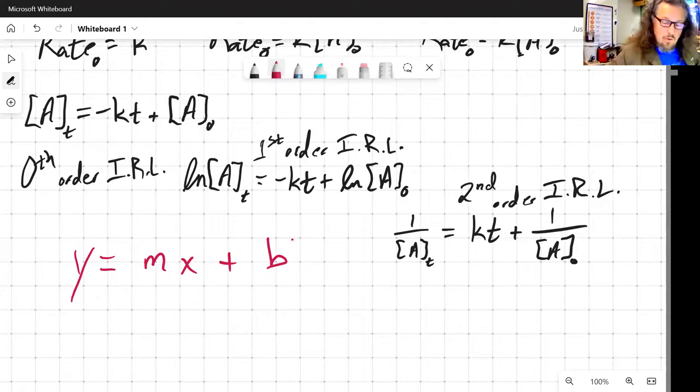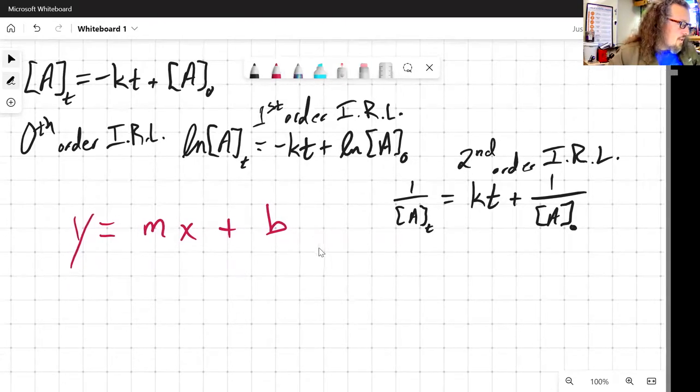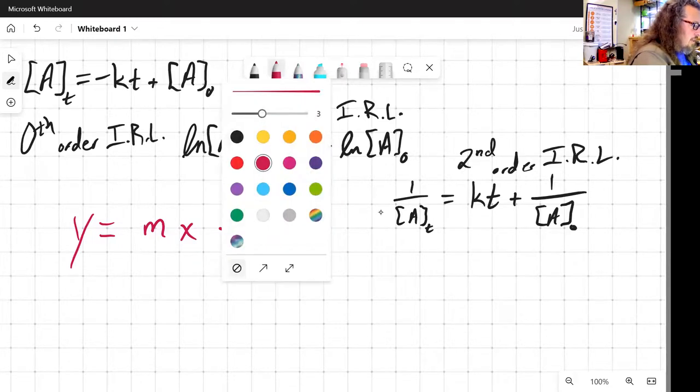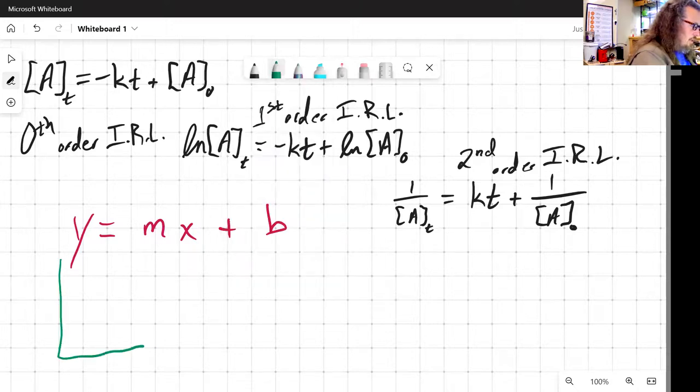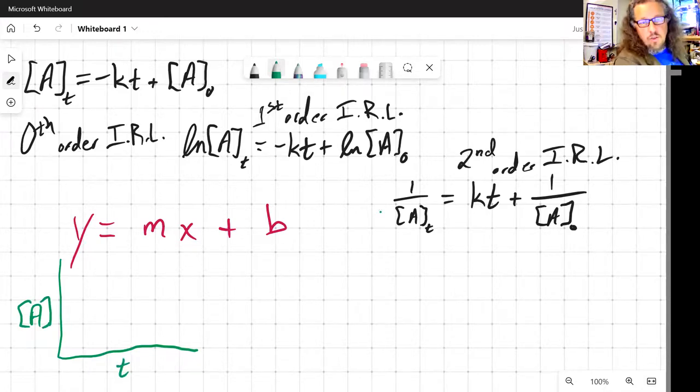But what if I've got some set of data and that set of data is something I'm going to plot. And let's plot concentration on the y-axis, time on the x-axis. Over time, concentration goes down, right? If it goes down linearly, then it must be a zeroth order.